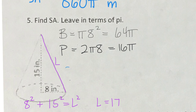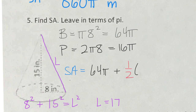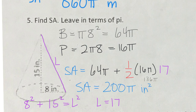For the cone surface area formula, there's just one base, plus half of the perimeter (16 pi) times the slant height of 17. Working through the calculation gives a surface area of 200 pi square inches. You can put that in your calculator as a decimal, but then it's no longer expressed in terms of pi.